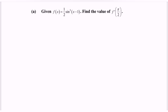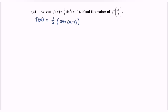Given the function f(x) equals 1 over 2 multiplied with sine cubed for the angle (x minus 1). Find the value of f' for the angle pi over 2.